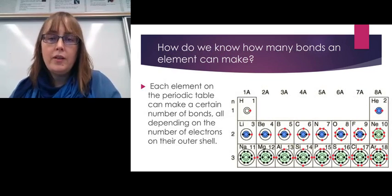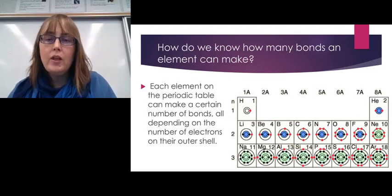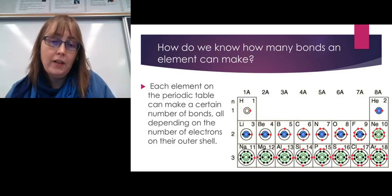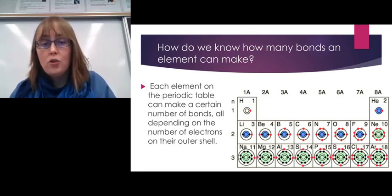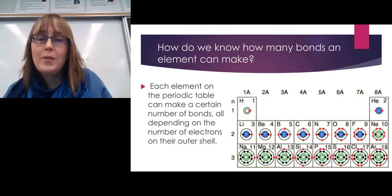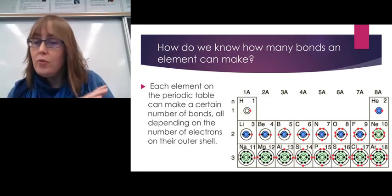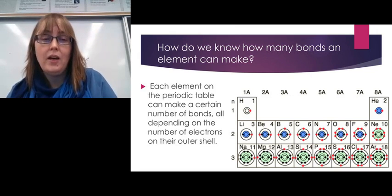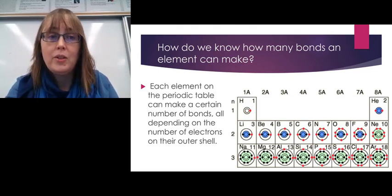Each of these different balls actually has little tiny holes, and the holes represent the number of bonds that each element can make. When we looked at the periodic table and did the Bohr-Rutherford diagrams, we noticed that elements have electrons in the outer ring. Those outer electrons are called valence electrons, and they are going to help us know how many bonds each element can make.